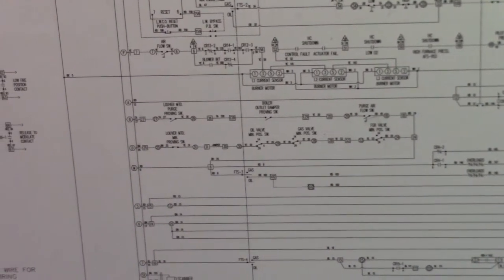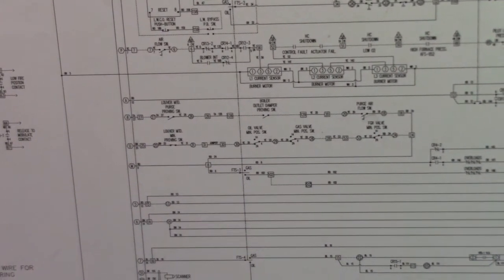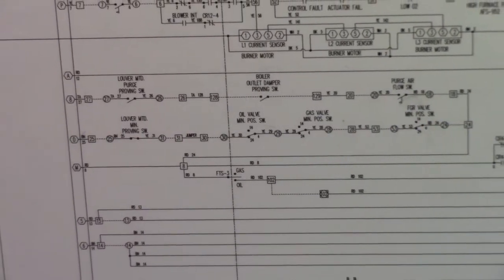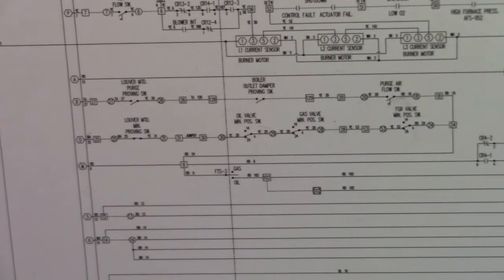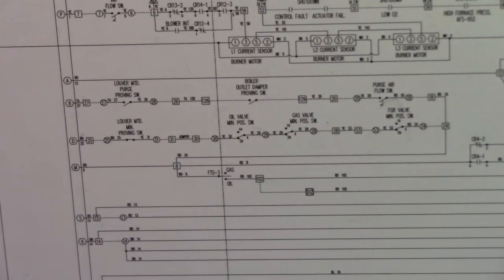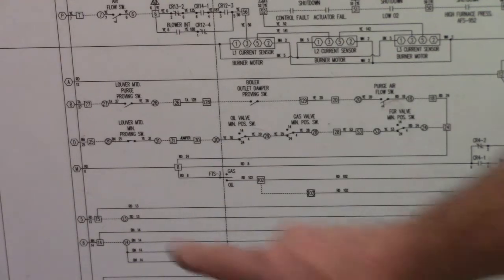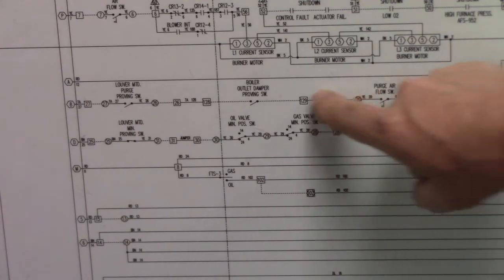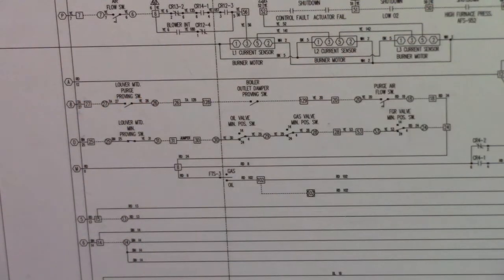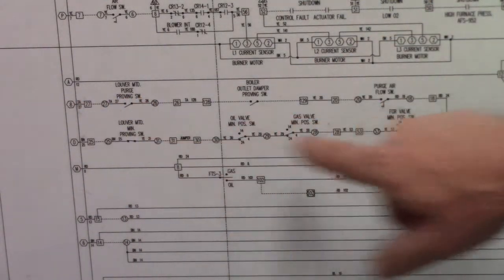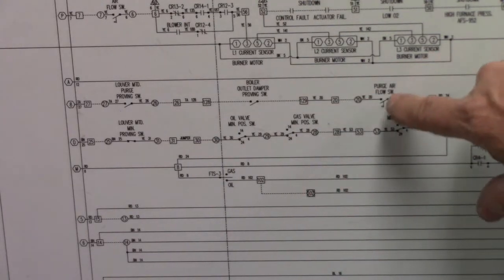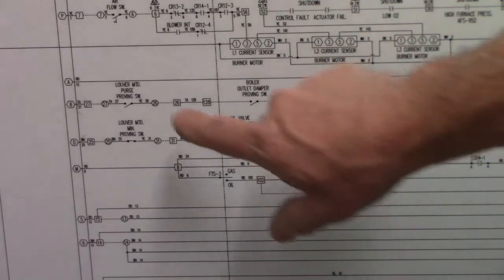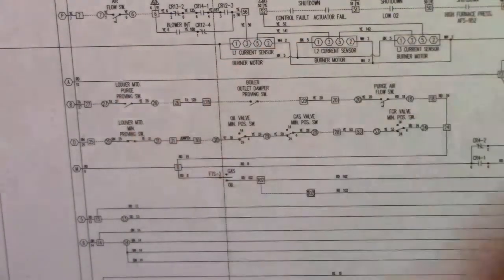And we see here the M8 loop. We see there are only three components in the loop: purge air flow switch, boiler outlet damper proving switch, and louver motor purge proving switch.